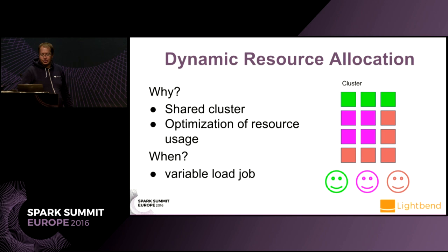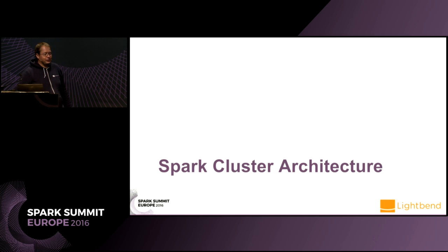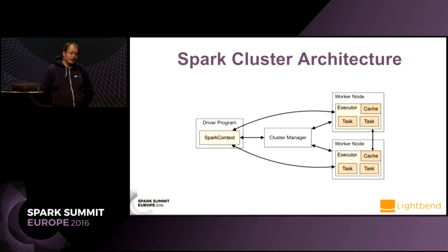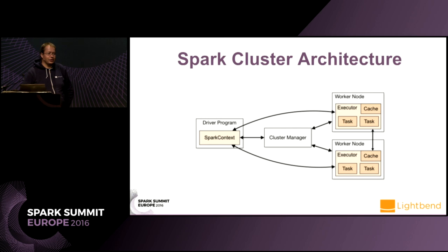That's the basic idea of dynamic resource allocation — why you use it and how it works. Let's speak about dynamic resource allocation inside Spark. This is the basic view of a Spark cluster: you have the cluster manager which manages the nodes, and the driver program which speaks with the cluster manager, asking it for some executors, and then the driver uses those executors to execute the tasks.